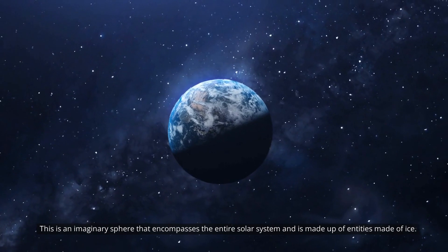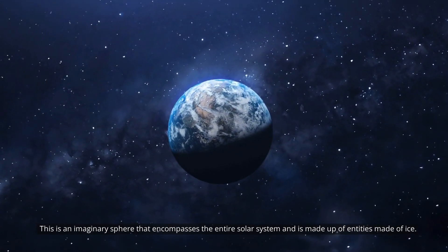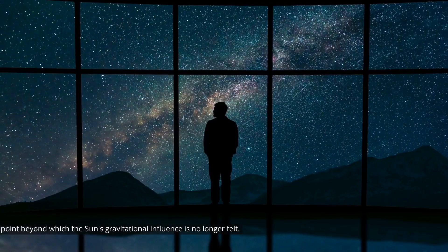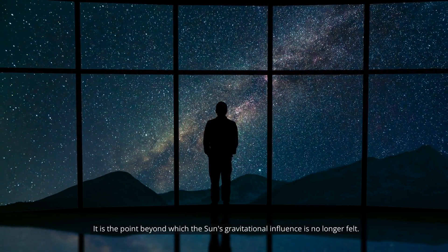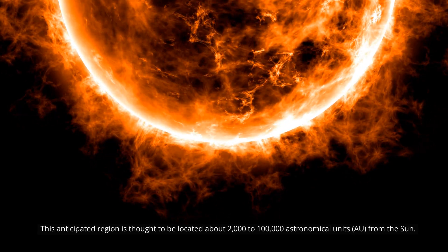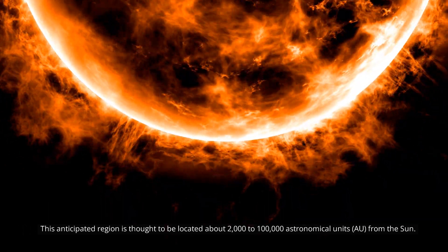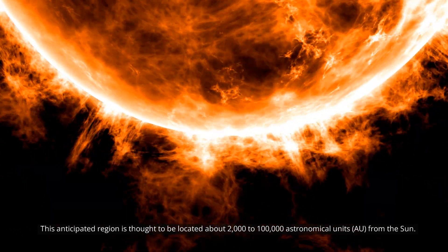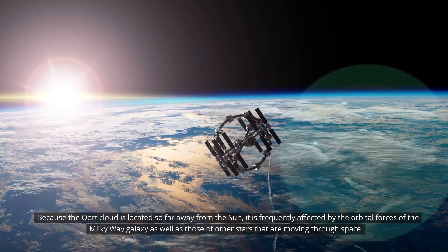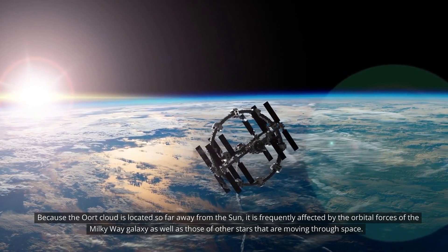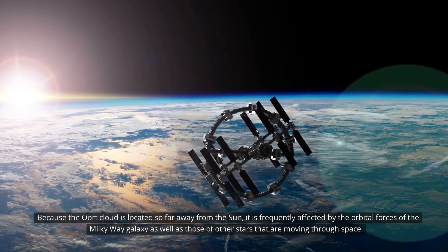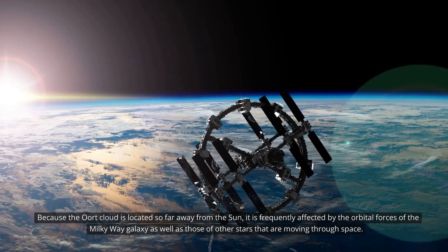The boundary of the solar system ends in a spherical cloud known as the Oort cloud. This is an imaginary sphere that encompasses the entire solar system and is made up of entities made of ice. It is the point beyond which the Sun's gravitational influence is no longer felt. This anticipated region is thought to be located about 2,000 to 100,000 astronomical units from the Sun. Because the Oort cloud is located so far away from the Sun, it is frequently affected by the orbital forces of the Milky Way galaxy as well as those of other stars that are moving through space.